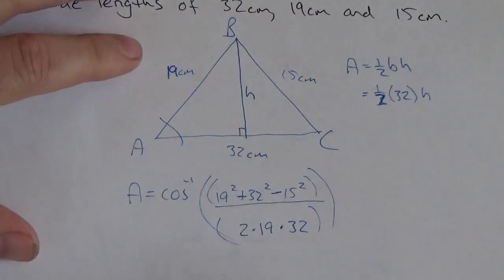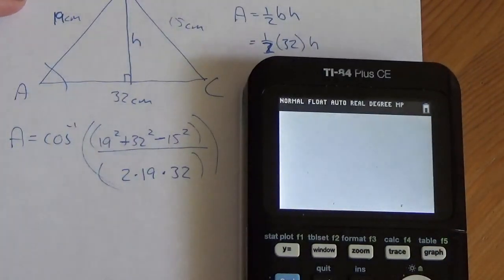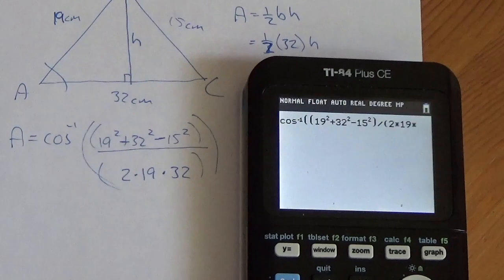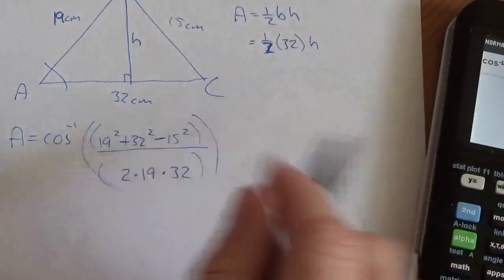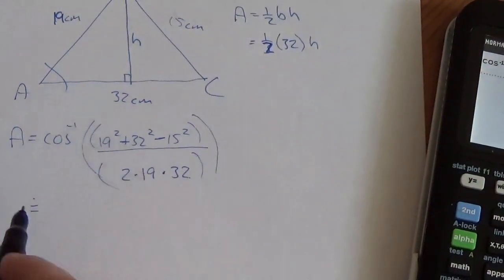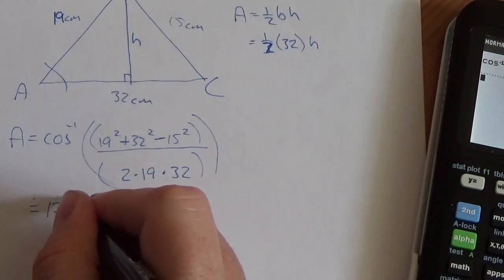Okay, so now, let's plug this into the calculator. So, second, cosine, make sure I've got my other set of brackets there, so 19 squared plus 32 squared minus 15 squared. I'm going to close the brackets for the numerator, divided by, open them for the denominator, 2 times 19 times 32. I'm going to close them for both, and when I hit enter, I'm getting roughly 17.5 degrees. This is approximately 17 degrees.